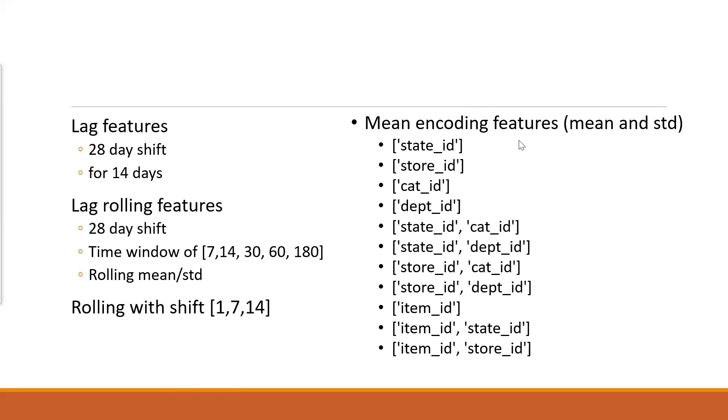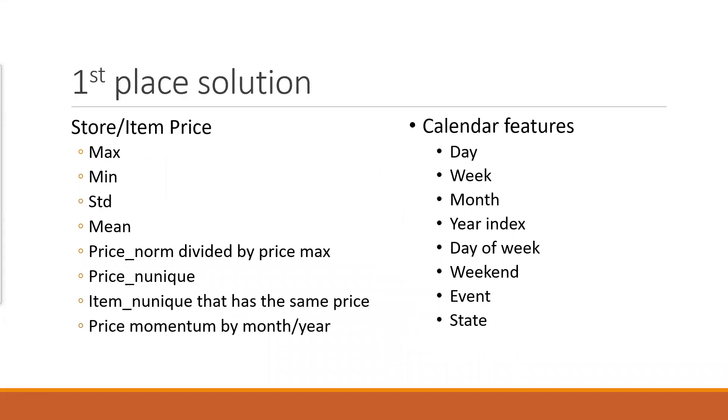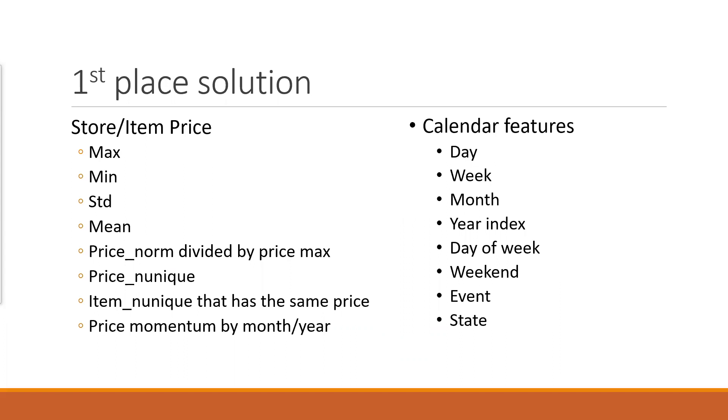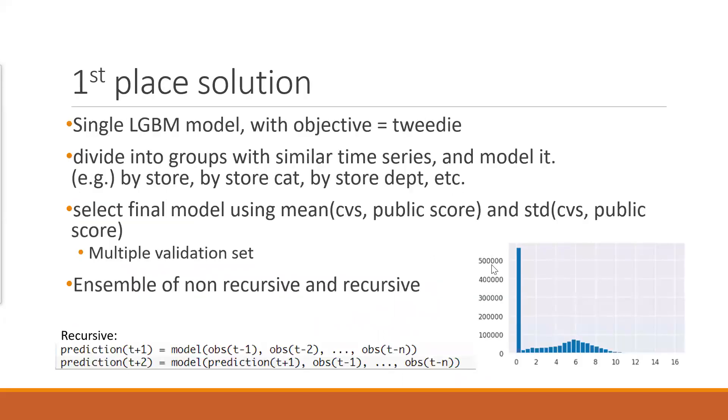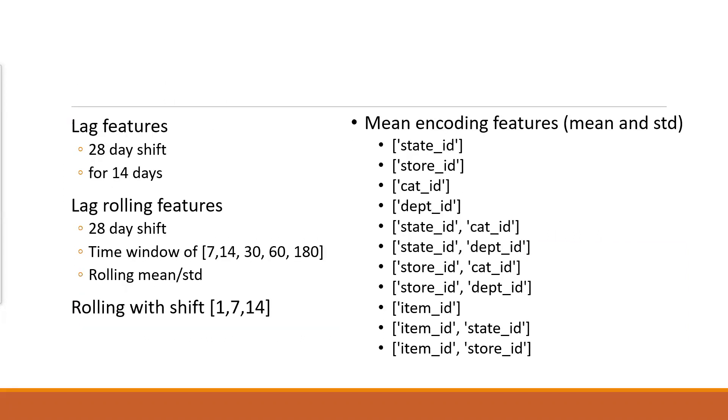And this is also very interesting. They do mean encoding features. Because you have so many different stores categories, and then they just for each of the IDs or different groups, you define a group by state, by store, by category, by item. And then you extract the stats within each group. So they call it a mean encoding features. So I would say this solution, they again generate lots of stats about the prices, about the sales, temporal stats, and then they generate lots of stats or features with respect to each group. And then for the models, it's a single LGBM model. And then they do the ensemble of non-recursive and non-recursive. That's the first place solution.